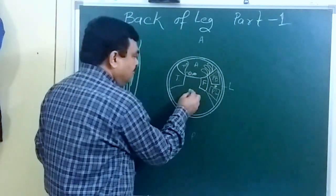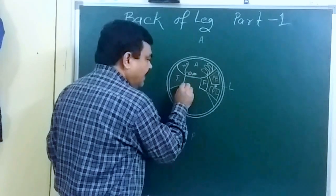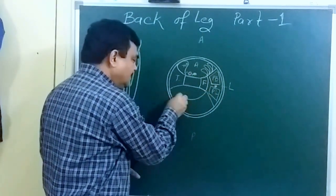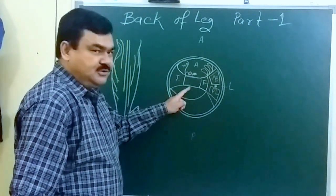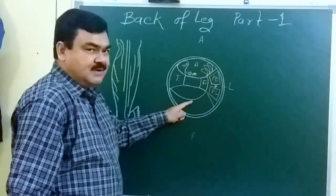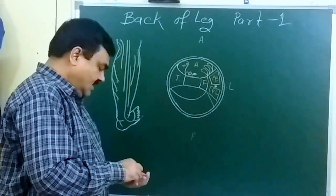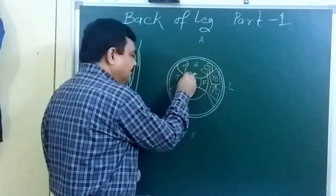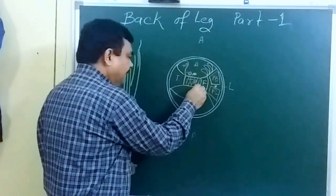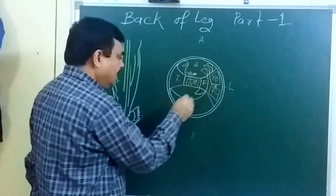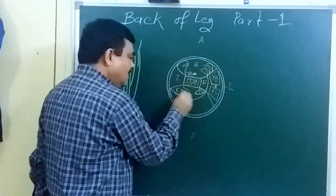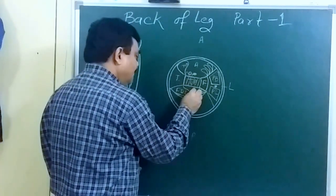Today we'll discuss about the posterior compartment. The posterior compartment is divided into three parts by two fascial septa: the superficial transverse fascia and the deep transverse fascia. This part is divided into superficial, intermediate, and deep parts by two septa. In the deep part, here tibialis posterior muscle is present.